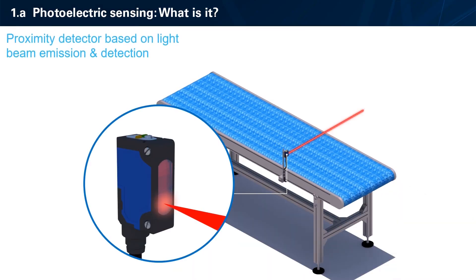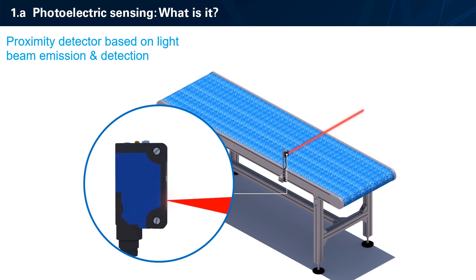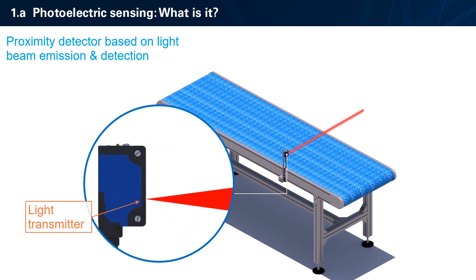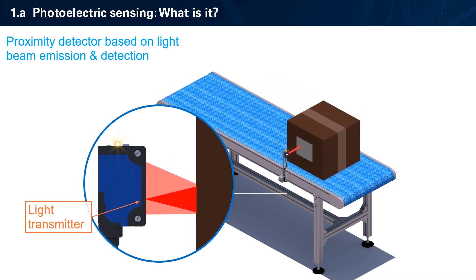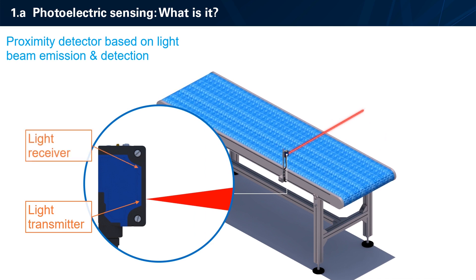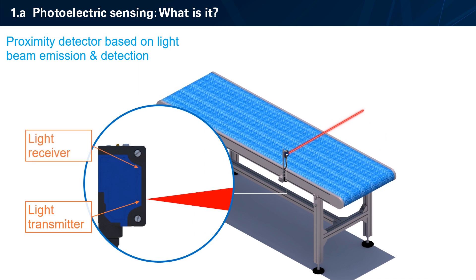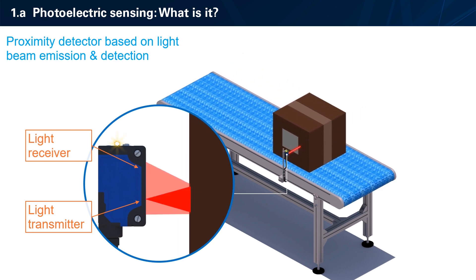A photoelectric sensor is a proximity detector based on light beam emission and detection. The light beam transmitter, usually a light-emitting diode, emits a light beam. When an object goes through the beam, the beam is deviated. The light-sensitive receiver detects this deviation. In this example, the light-sensitive receiver detects the beam reflection.